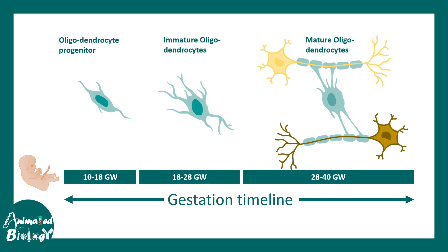How can one tell from a molecular perspective that these are different stages of oligodendrocyte development? Different molecular markers can differentiate between these cellular states. Oligodendrocyte progenitors express NG2 and PDGFRα. Olig1 and Olig2 are highly enriched in immature oligodendrocytes, whereas mature oligodendrocytes express proteins like myelin basic protein (MBP), MOG, and PLP. Based on these molecular markers they are distinguishable. It's also important to note that oligodendrocyte progenitor cells have the capability of self-renewal, so they can divide and multiply.